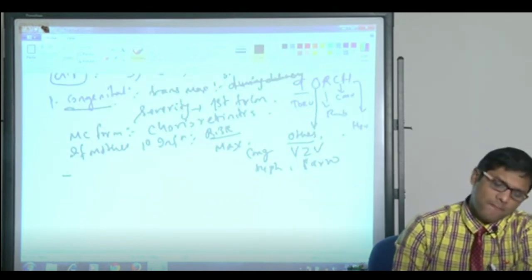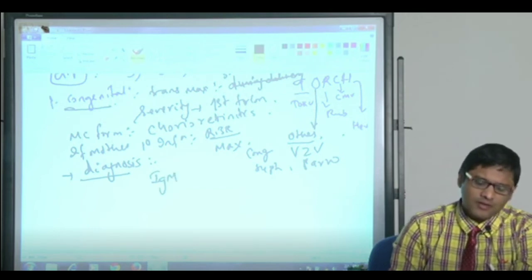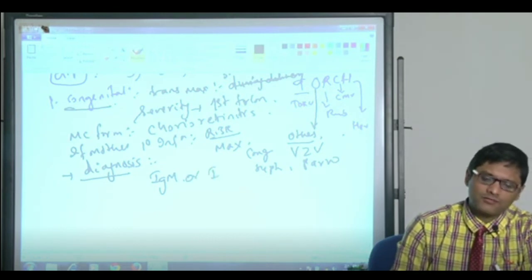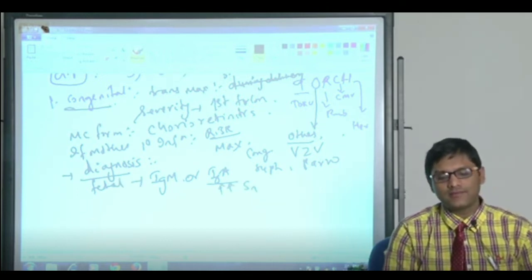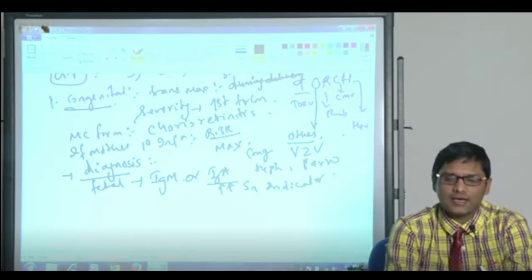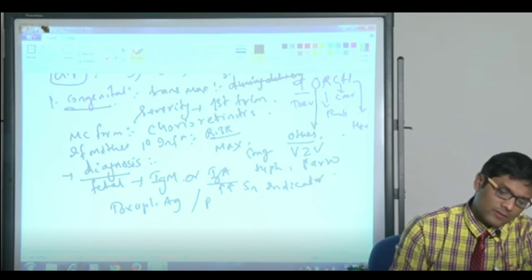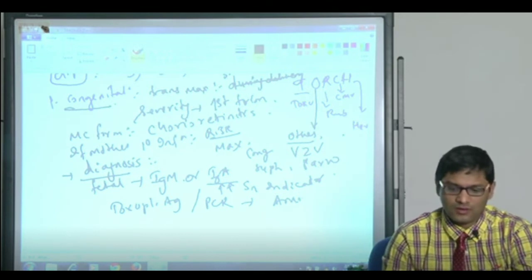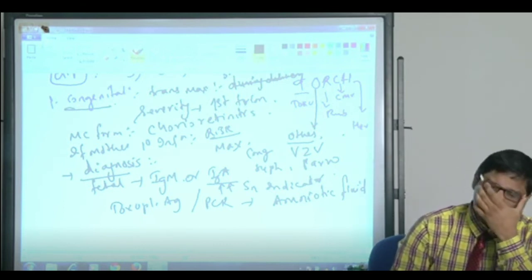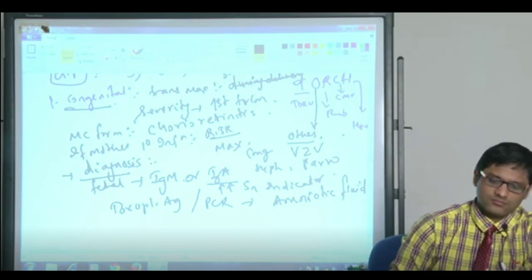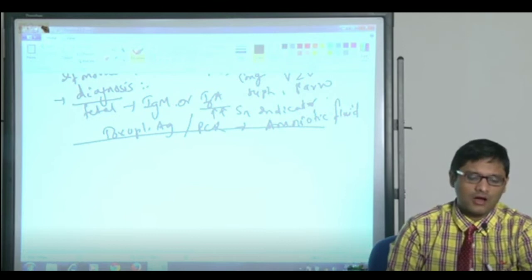Congenital toxoplasmosis diagnosis is by detection of IgM antibody or IgA antibody. In fetus, IgA antibody is more sensitive indicator than IgM. Other than that, of course, toxoplasma antigen can be detected, or you can go for PCR detecting gene in amniotic fluid. This is about congenital toxoplasmosis.